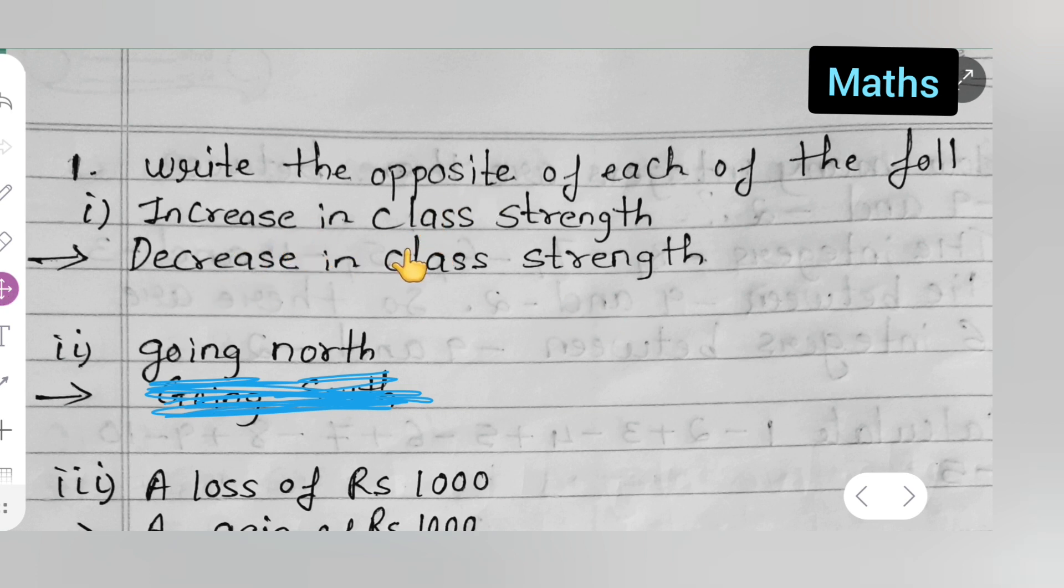The opposite of increase in class strength is decrease in class strength. Second, the opposite of going north will be going south.